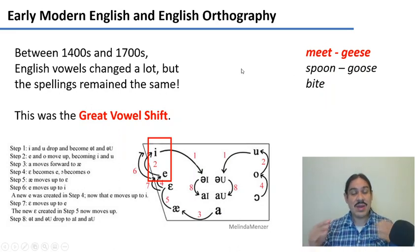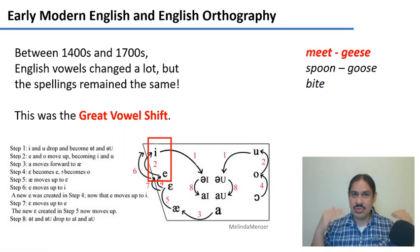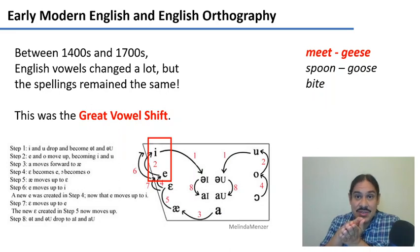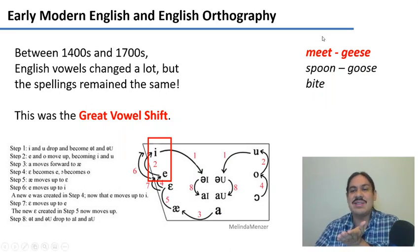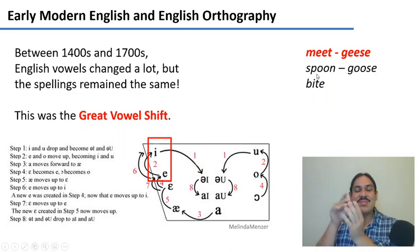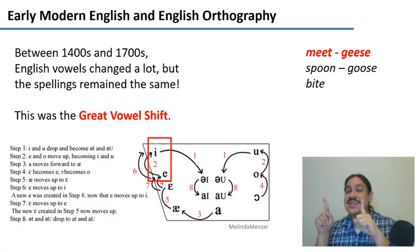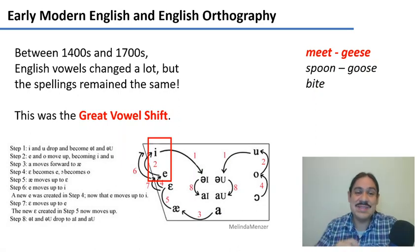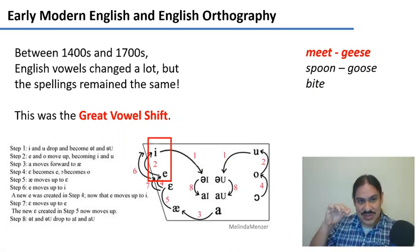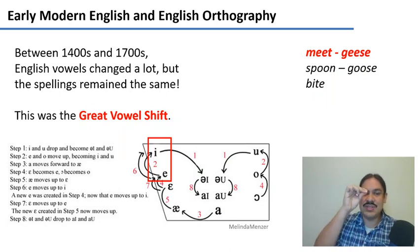When printing was introduced to Europe, people started printing their books as they spoke in the 1300s and 1400s, with words that sounded like 'mat,' 'gas,' 'spon,' and 'ghost.' But then, between the 1400s and 1700s, all of the vowels of English changed in what's called the Great Vowel Shift.